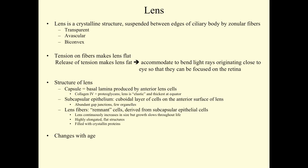The structure of the lens includes a capsule, which is essentially a basal lamina produced by anterior lens cells. There's collagen type 4 plus proteoglycans. The lens is naturally elastic and thickest at the equator. There's a subcapsular epithelium — a layer of cuboidal cells on the anterior surface of the lens. These cells have abundant gap junctions and few organelles.